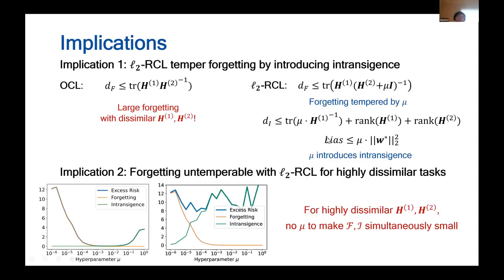So what's the implication of this result? Essentially, to achieve a good L2 RCL performance, we need both these effective dimensions, df and di, and the bias to be small.